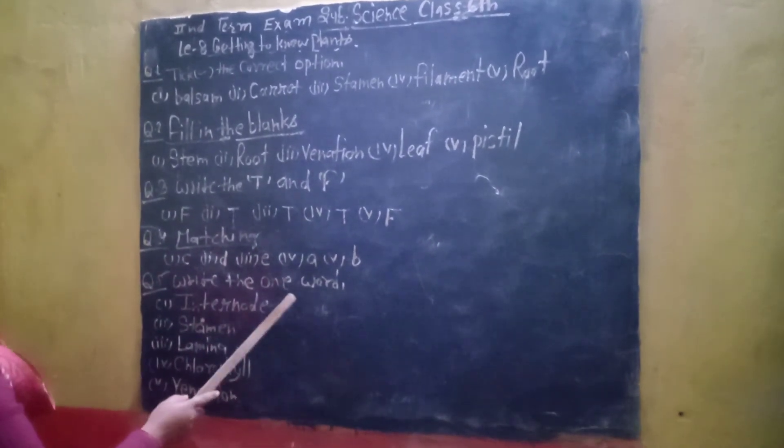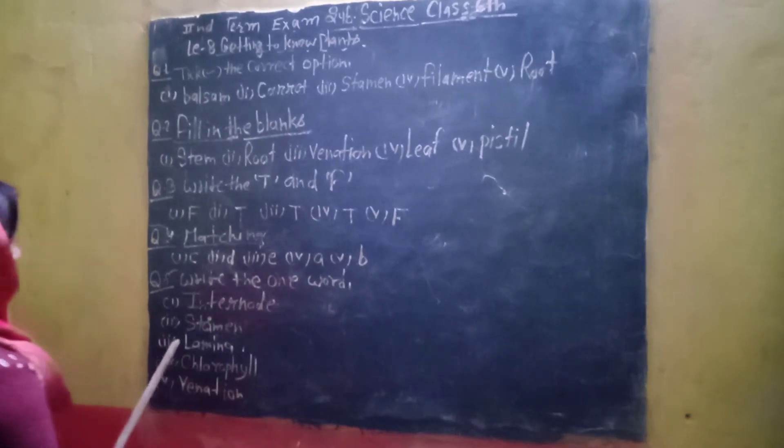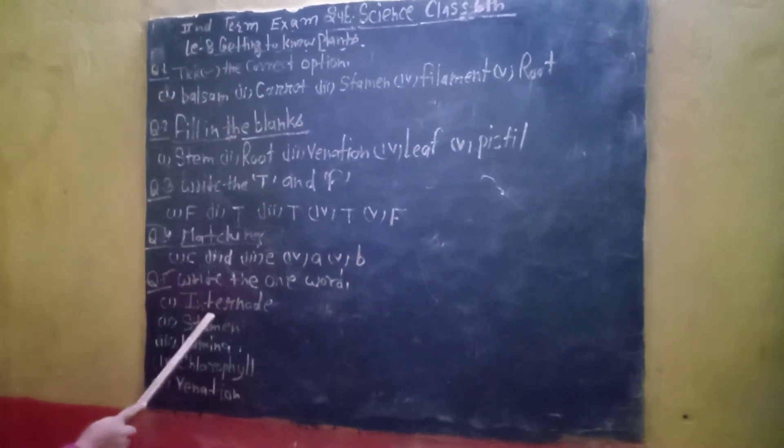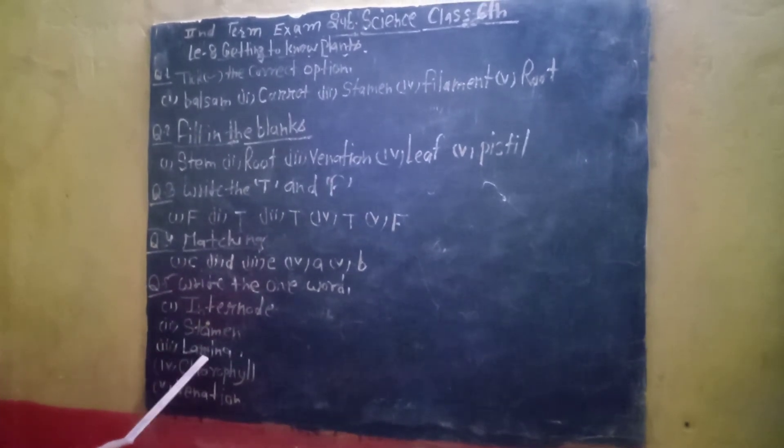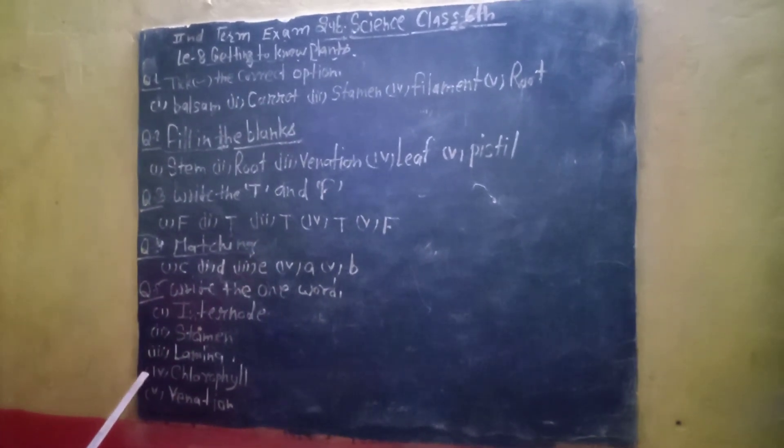Question No. 5 Write the One Word Answer. Answer Me First Me Intern, Second Me Third Me Lemming, Four Me.